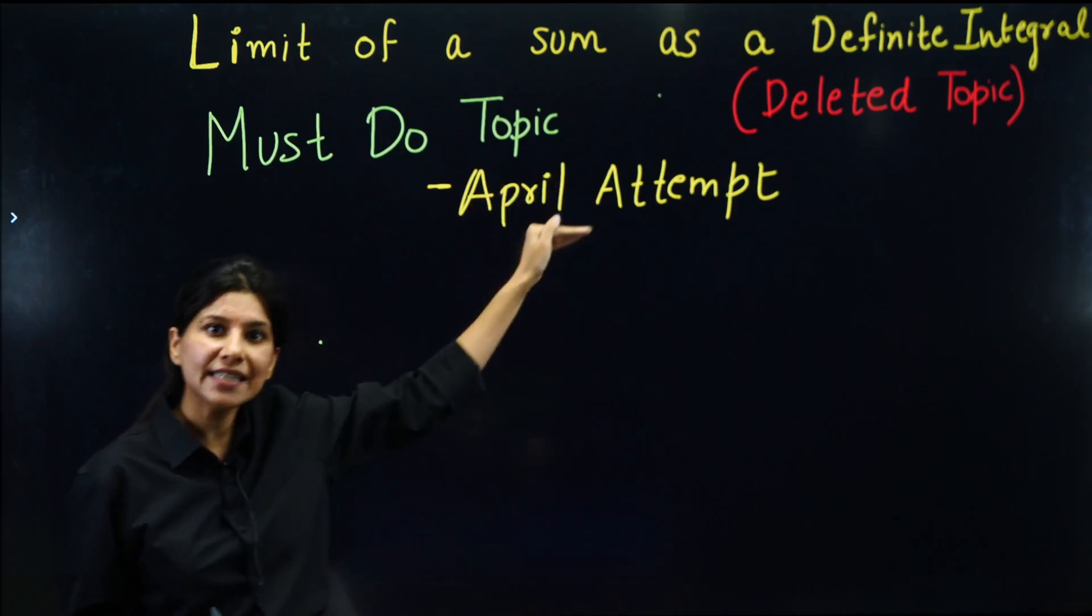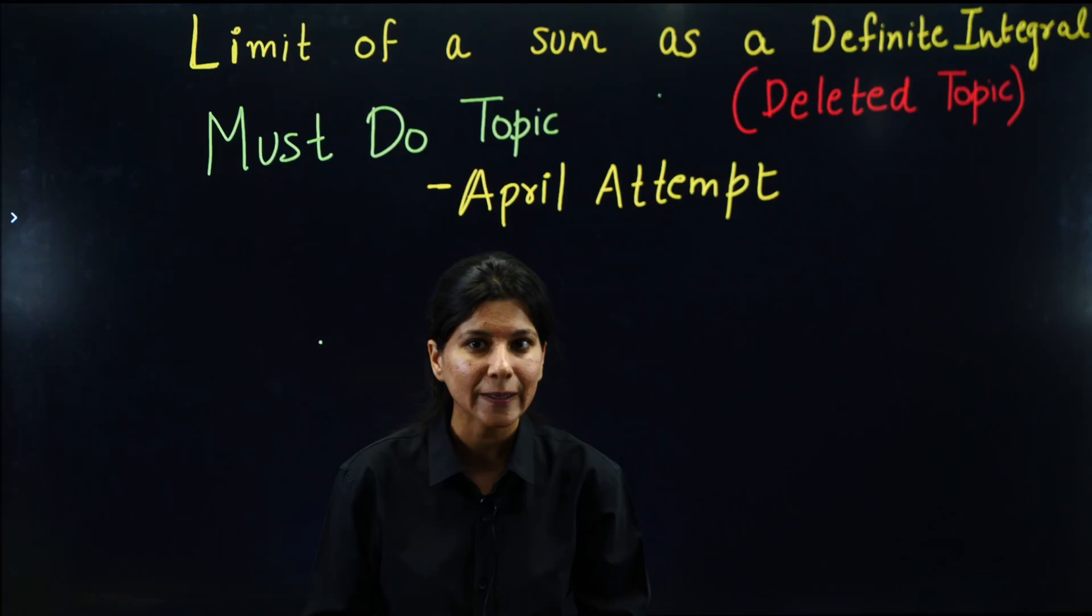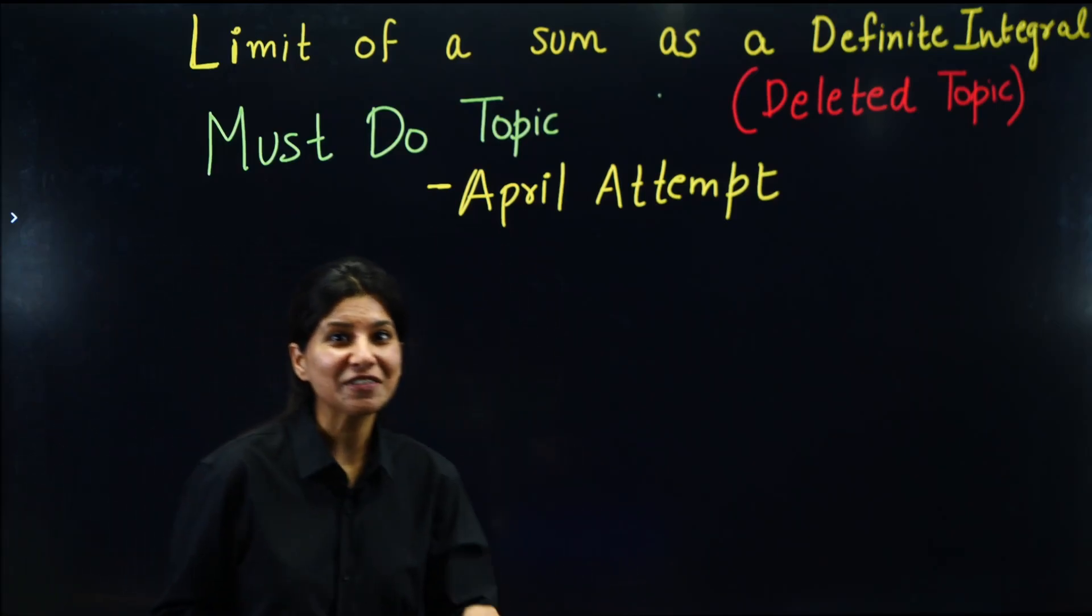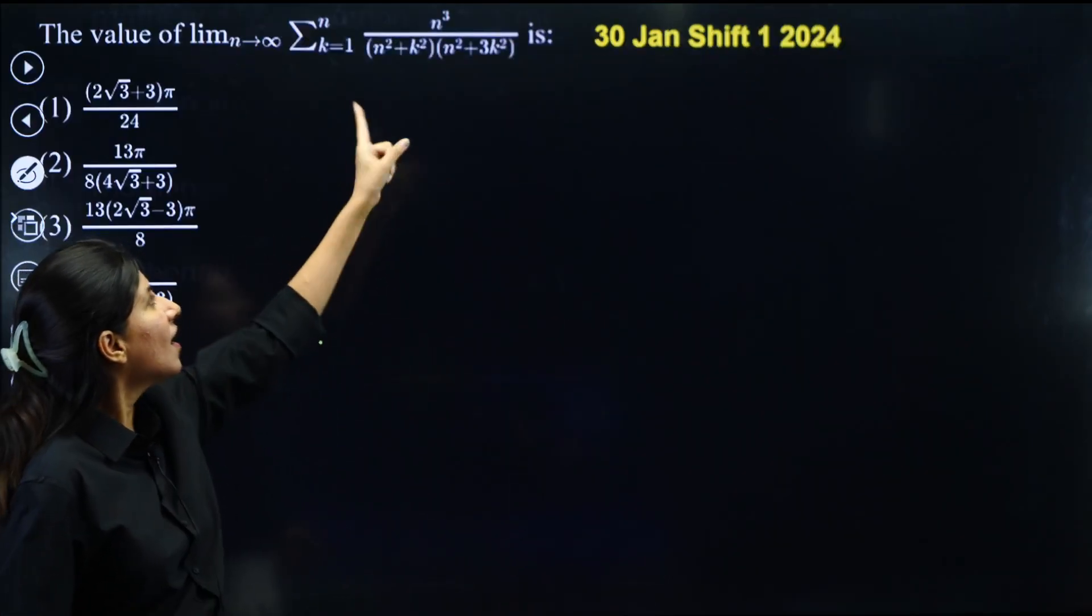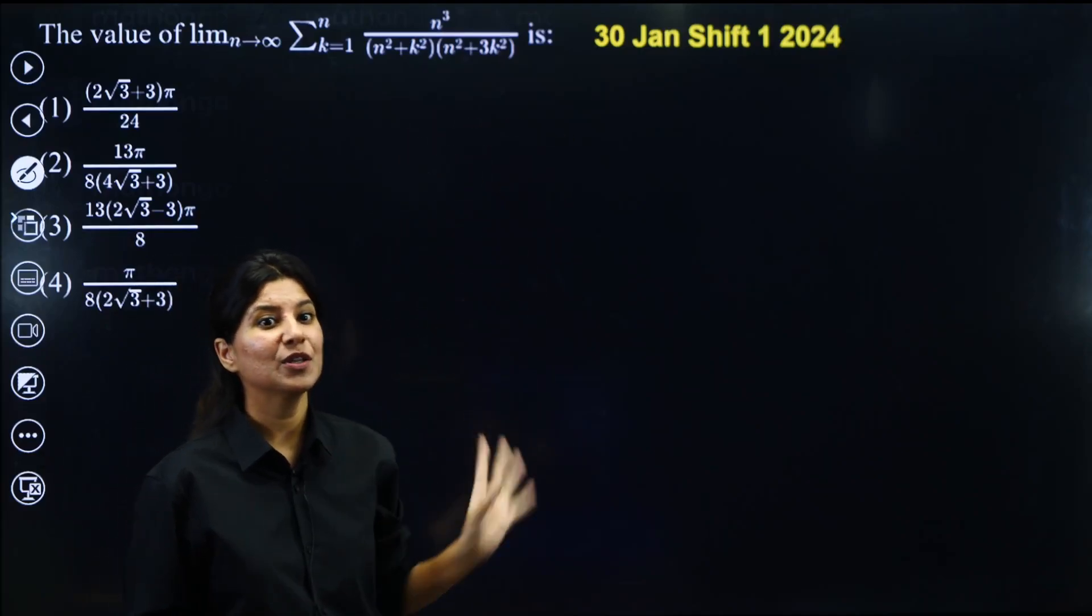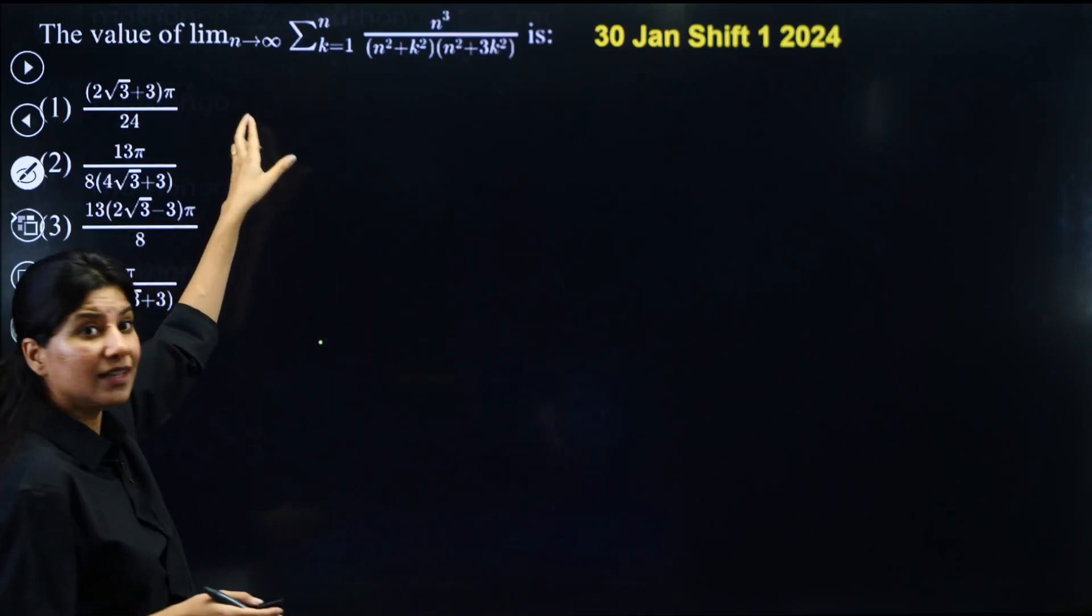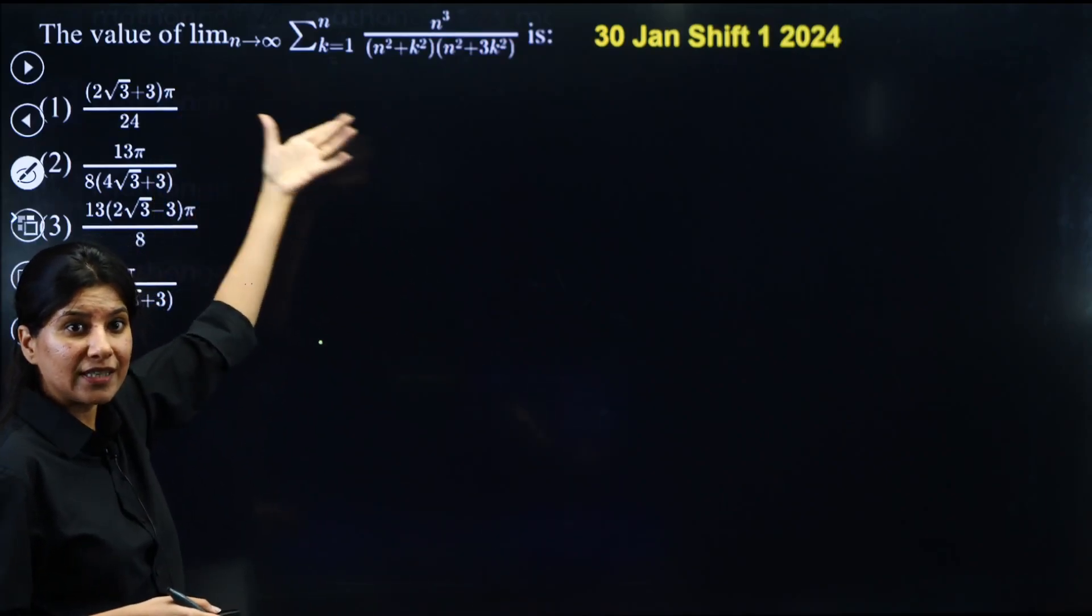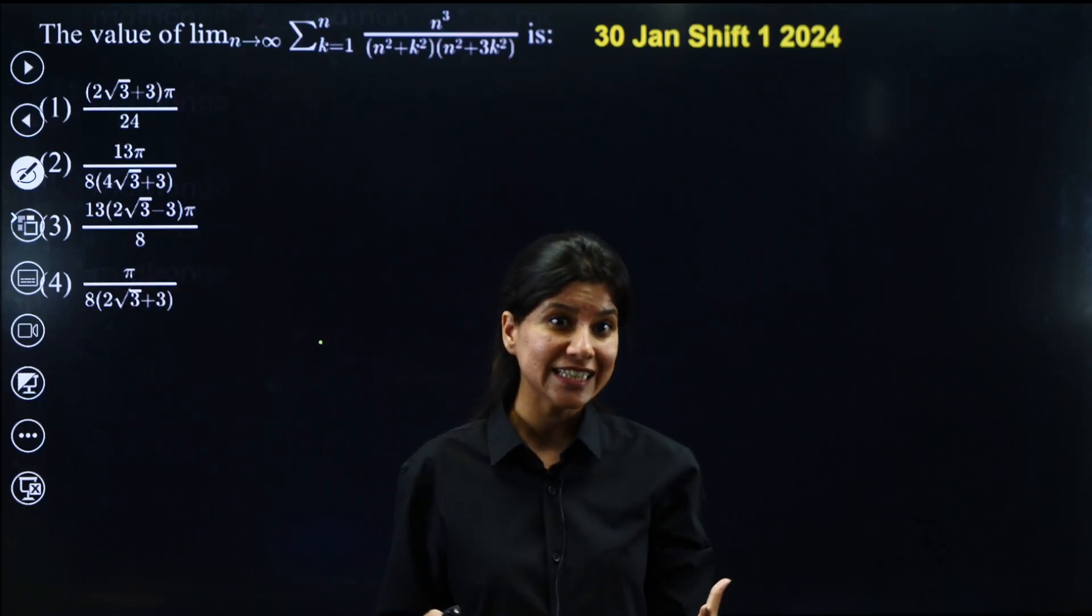So basically, this is an easy-kill topic for those students who know how to do it. But guess what? NTA is NTA. Even after deleting, they have asked the similar question in 2024 January attempt, you can see over here. So the problem looks like it is of a limits chapter. But no, no, no. This is a problem from definite integration.